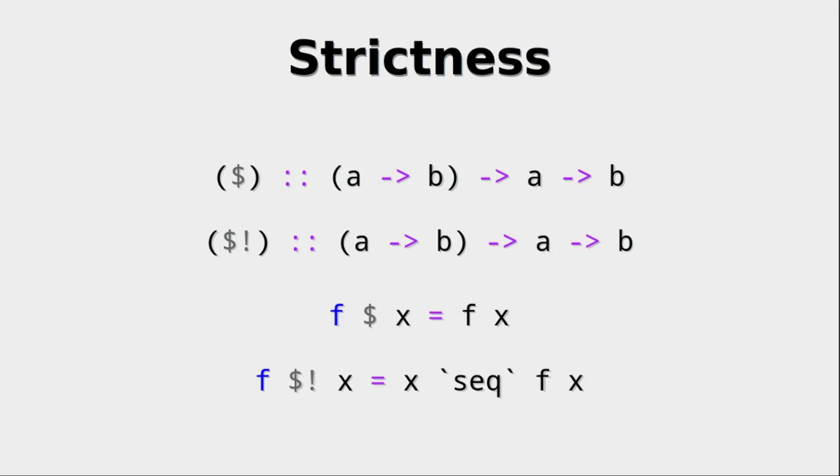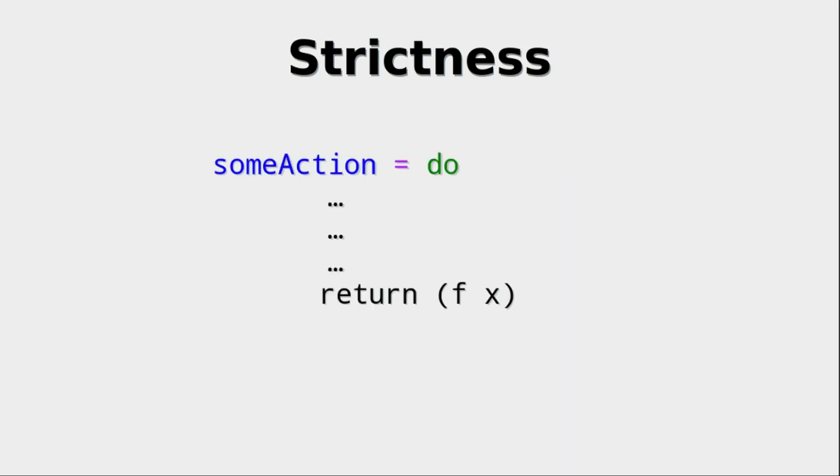But the dollar sign with the exclamation mark forces the evaluation of the second argument before doing the function application on it. So if x is some complicated thunk that is now put into f, using dollar sign exclamation mark actually evaluates the thunk before being put into f.